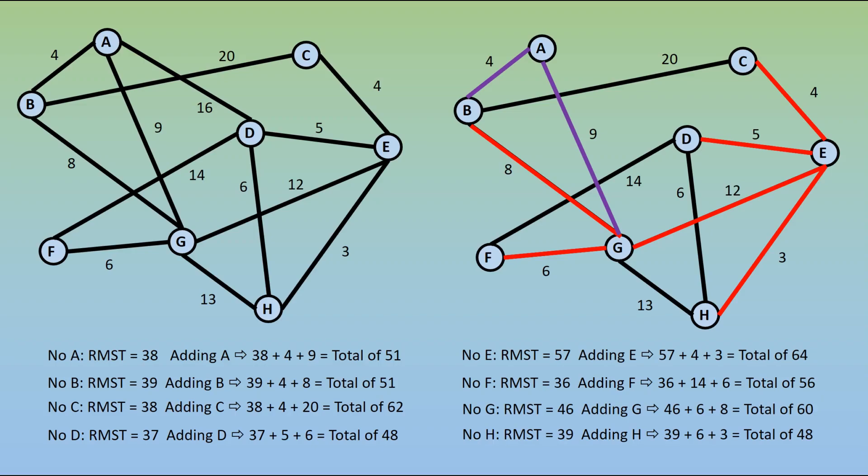In this case, our highest value is if we don't have E. That's a total of 64. We know now that we cannot beat 64. This is our lower bound. It may not be possible to find a solution for the traveling salesman problem at 64, but we know that we definitely can't beat it.